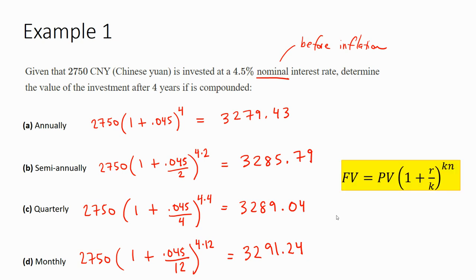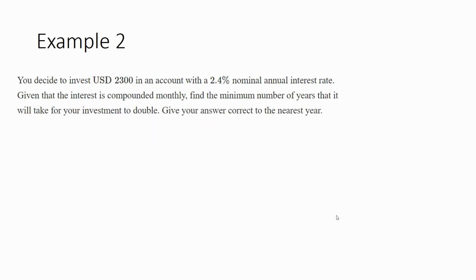And so our formula changes a little bit. We get this K where we take the interest rate and divide by K for the number of compounds. And we also take our number of years and multiply it by K. Okay, another example.